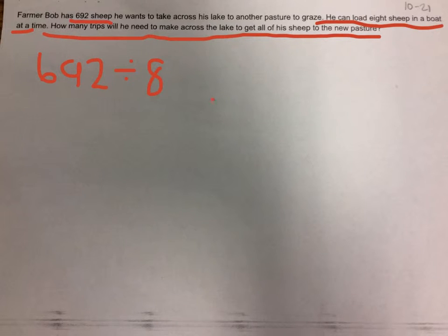Now we're going to use the big 7 strategy. The bigger number always goes on the inside and the smaller number always goes on the outside.